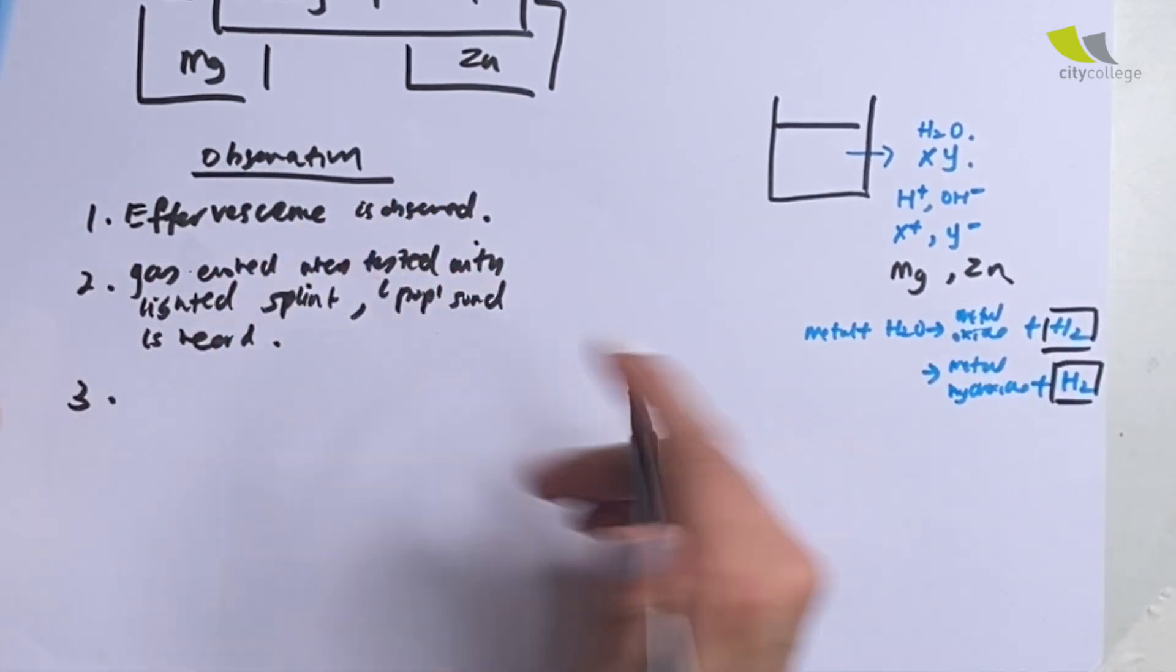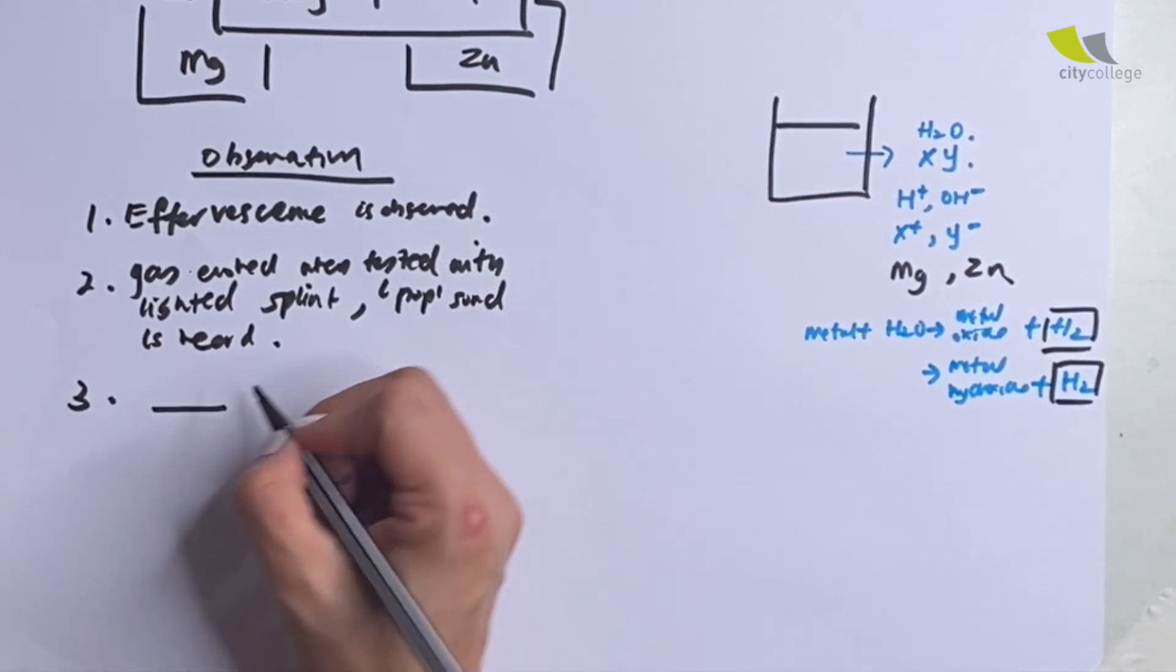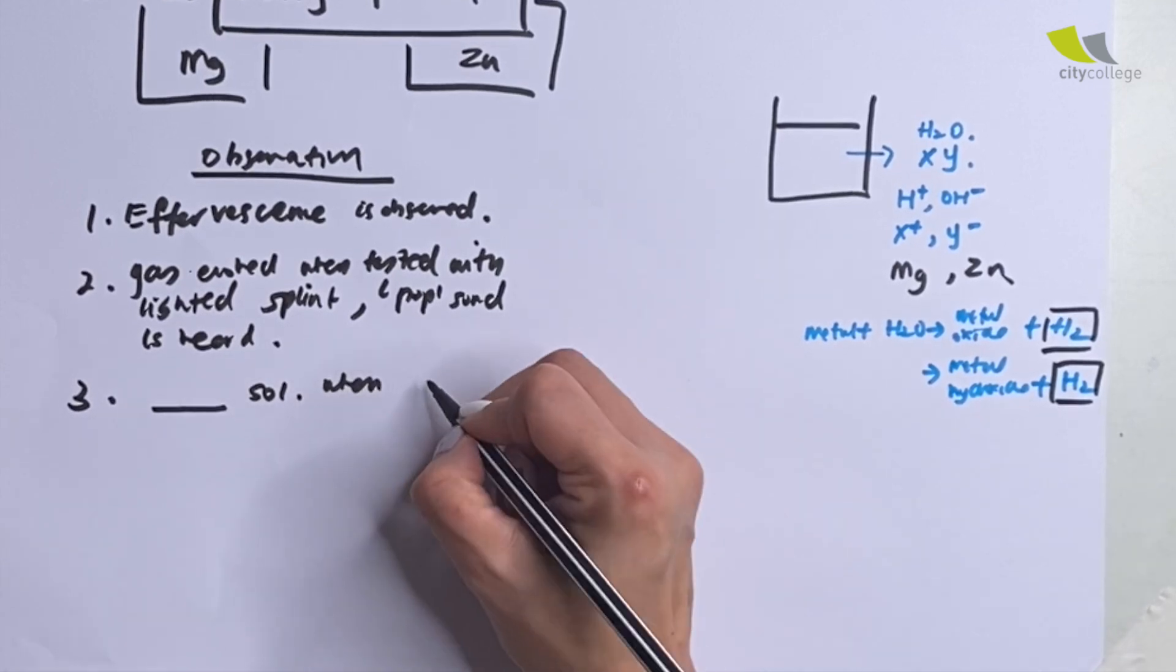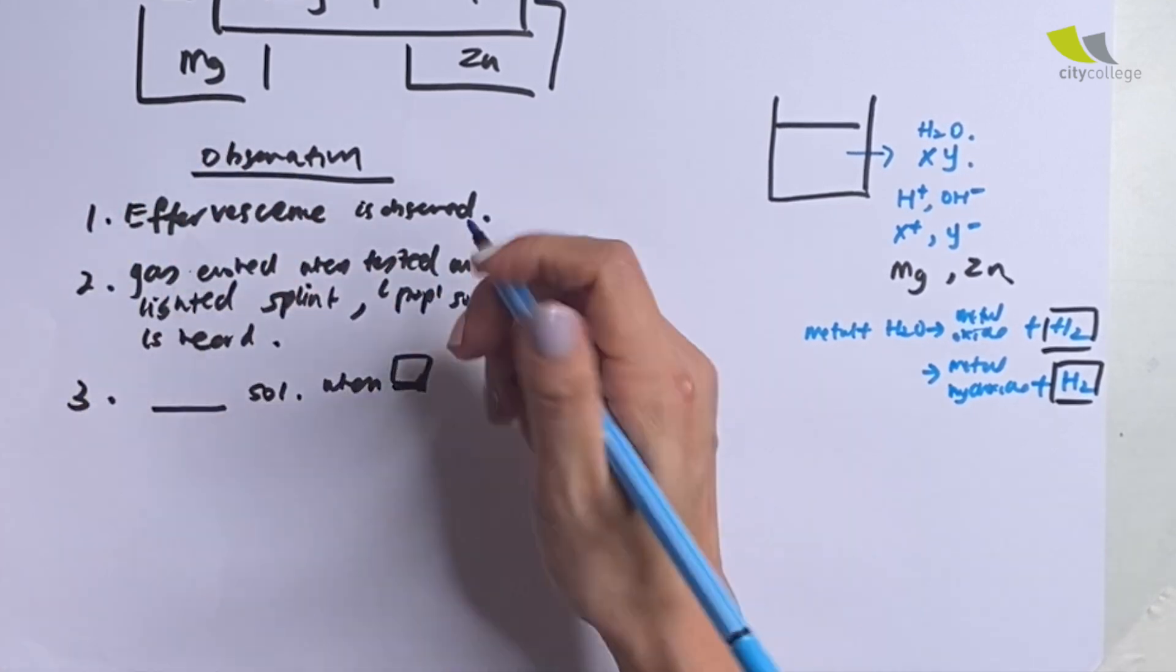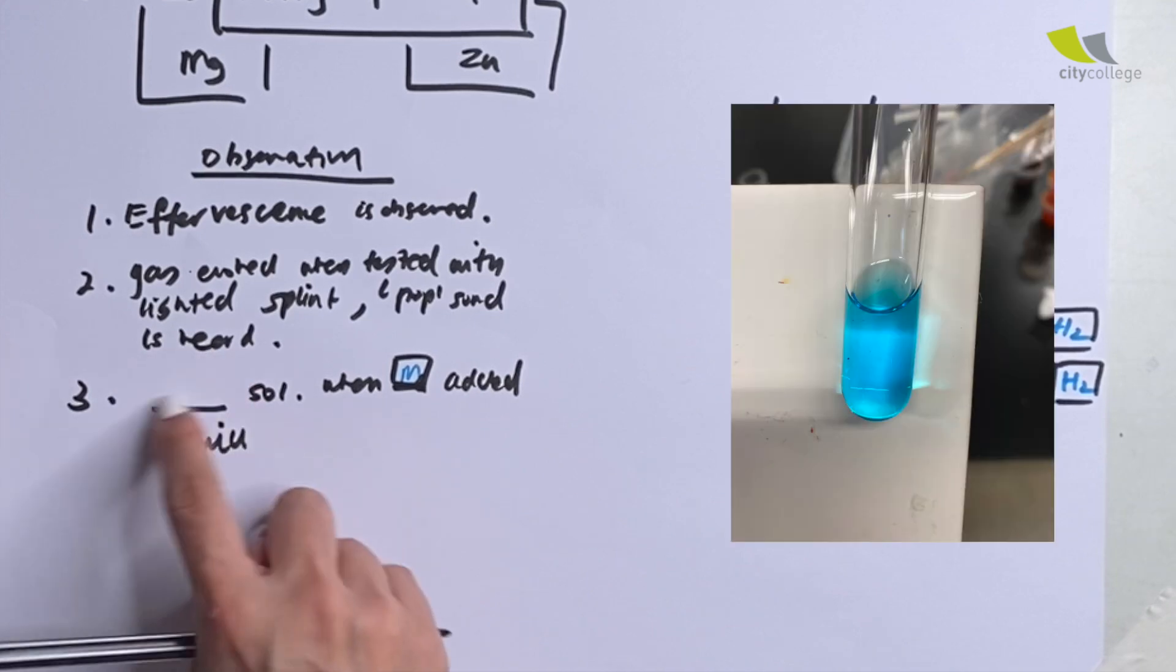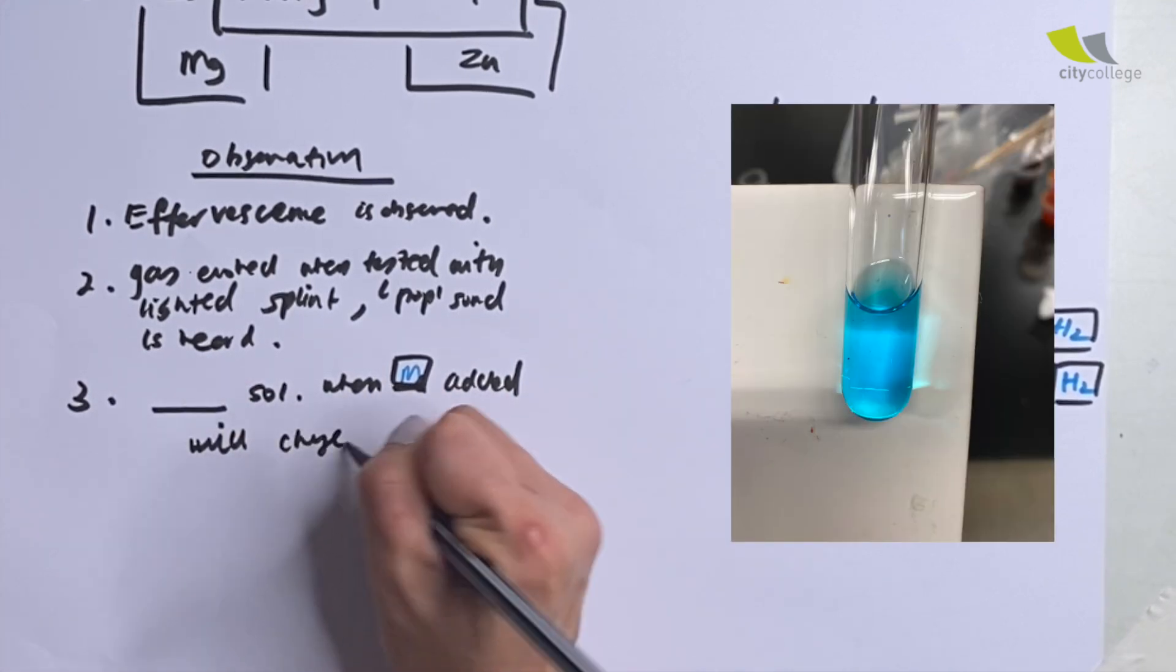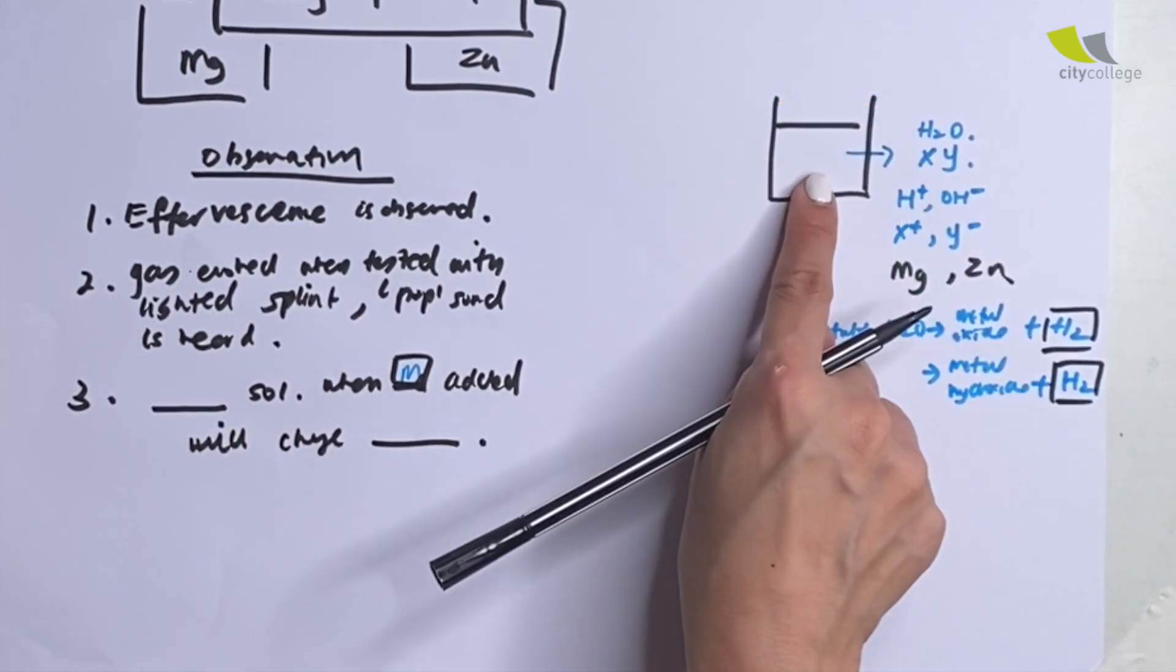Now, how about the third part? Now, this is a solution. So in the beginning, they will have a color. So you need to know the color of the solution when the metal, so you have to name it whatever metal it is. So I write it M, added, the solution will, so what is the color of the solution initially? When something is added, will change to what color? You have to write down the before and after color of the solution.